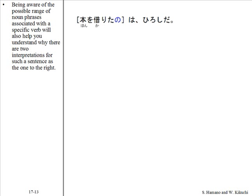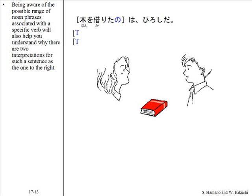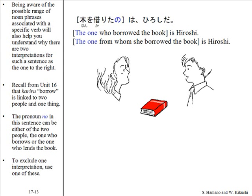Being aware of the possible range of noun phrases associated with a specific verb will also help you understand why there are two interpretations for such a sentence as the one to the right. Recall from Unit 16 that kariru, meaning 'borrow,' is linked to two people and one thing. The pronoun in this sentence can be either of the two people — the one who borrows or the one who lends the book. To exclude one interpretation, use one of these.